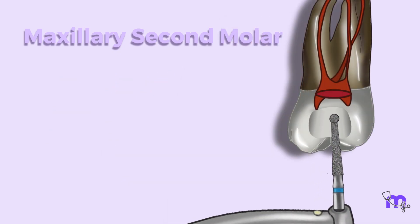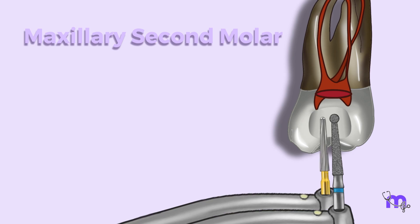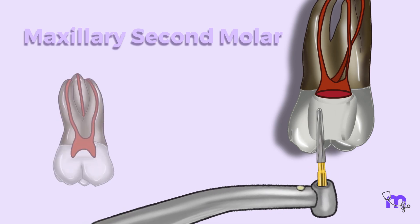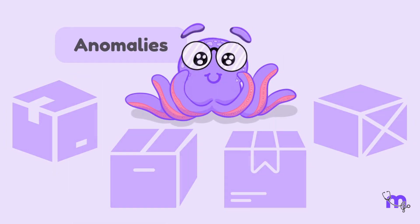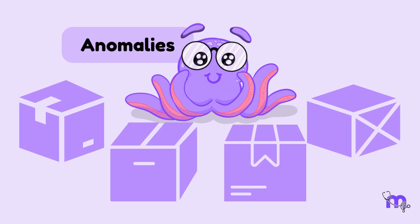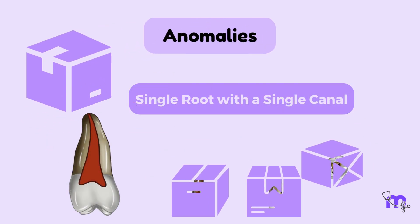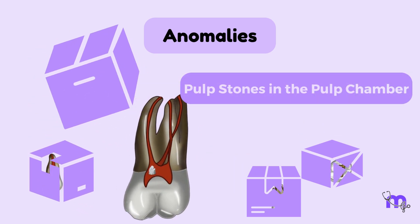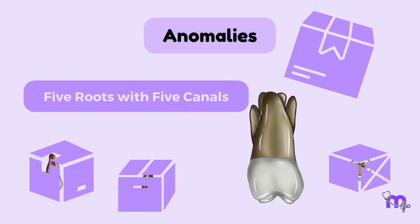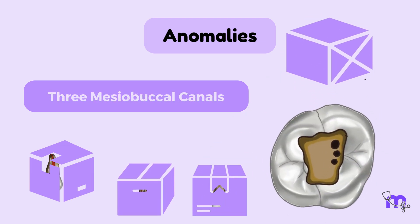The access opening for the second molar is the same as the first molar. The various anomalies include the presence of a single root with a single canal, incidences of pulp stones in the pulp chamber, rare cases of five roots with five canals, and the presence of three mesiobuccal canals.